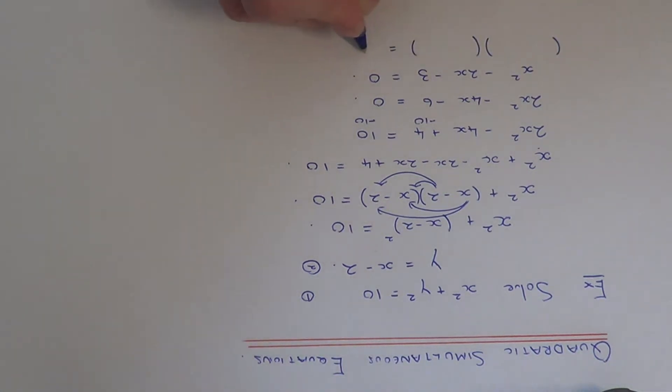So you should, at this stage, be able to factorise a quadratic equation. So we know the numbers must multiply to give minus 3 and add to give minus 2.